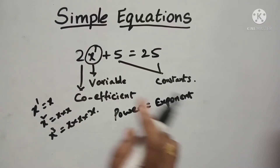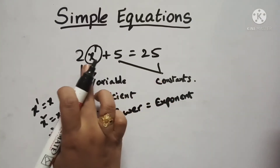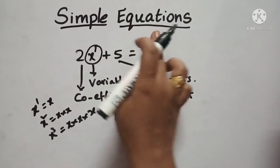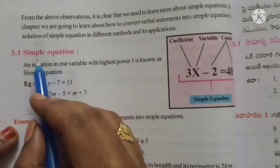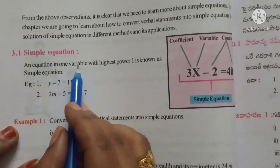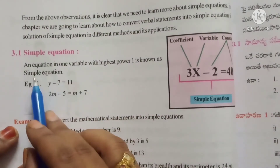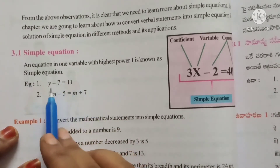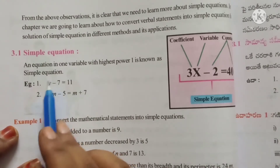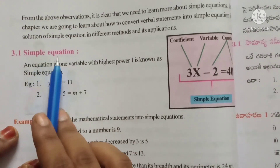In this equation, X has power 1, there is an equal to sign, and only one variable is used. Such an equation is called a Simple Equation. An equation in one variable with highest power 1 is known as a Simple Equation. So the equation must have only one variable and the highest power must be 1.